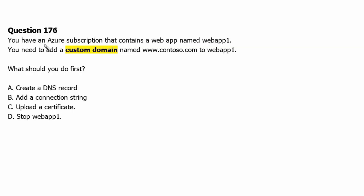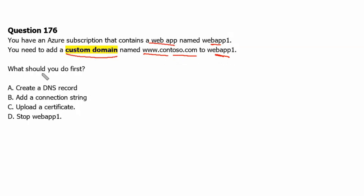Question 176. You have an Azure subscription that contains a web app named webapp1. You need to add a custom domain named www.contoso.com to webapp1. What should you do first?